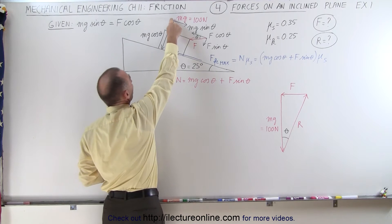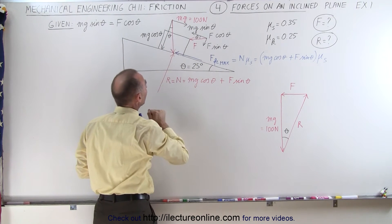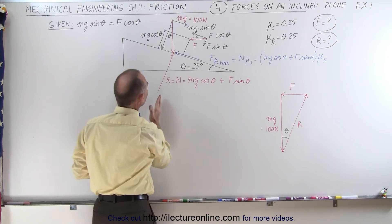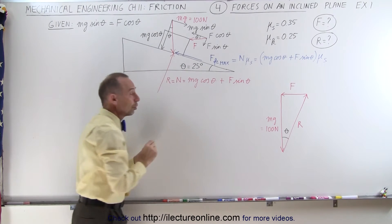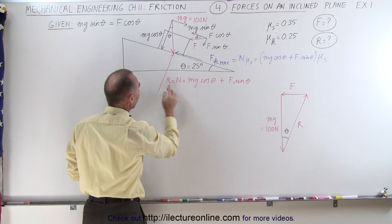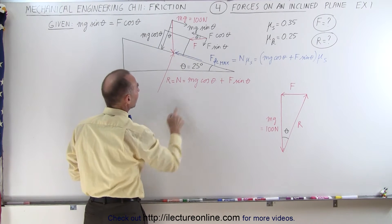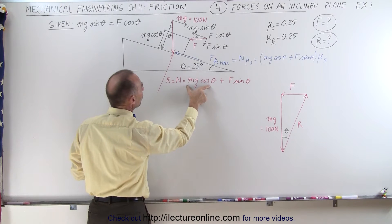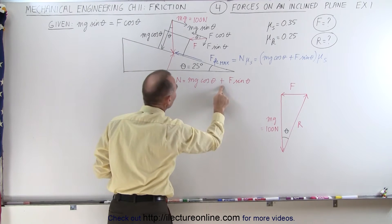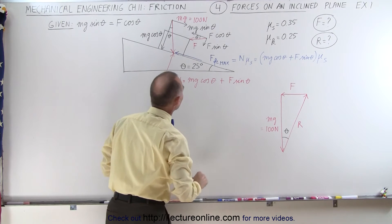Notice we have the component of the weight of the block equal to 100 Newtons pushing straight down. We have a force pushing against the block from right to left horizontally, and then we have the reaction force. The reaction force is exactly equal to the normal force, pointed perpendicular to the inclined plane. It equals the component of the weight perpendicular to the plane — mg cosine theta — plus the component of the force perpendicular to the plane — F times the sine of theta.